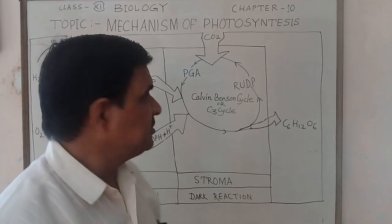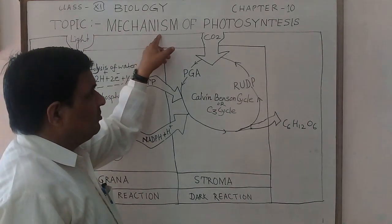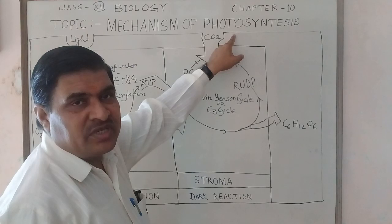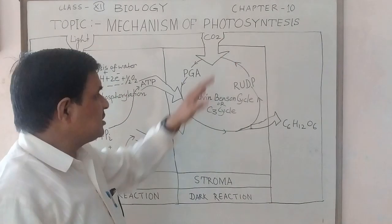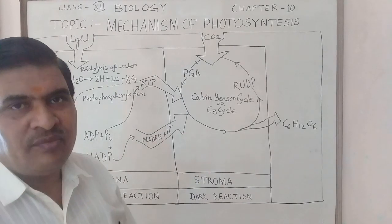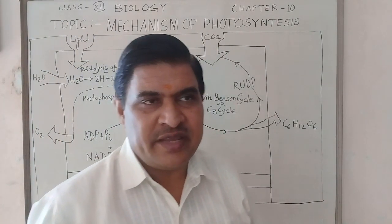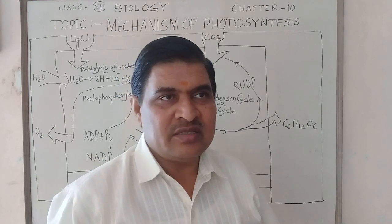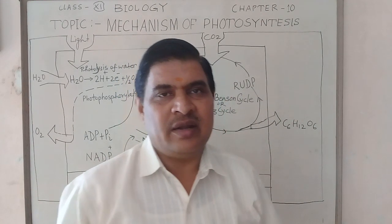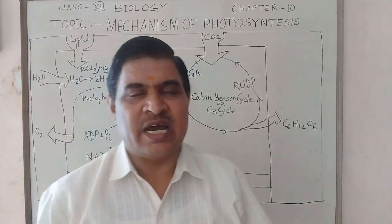Today, I will discuss the mechanism of photosynthesis. I explain it as two types of reactions: the light reaction, which occurs in the daytime, and the dark reaction, which occurs in the night.